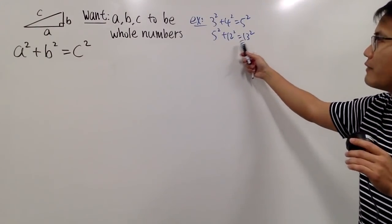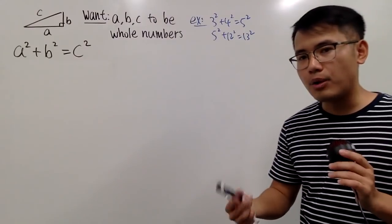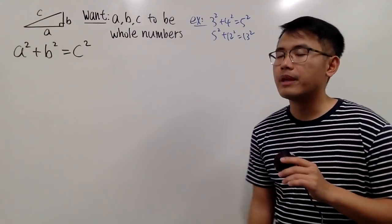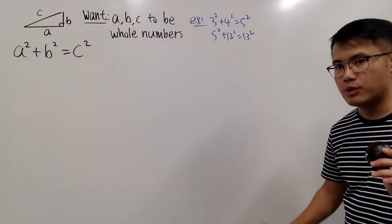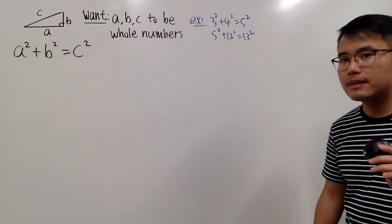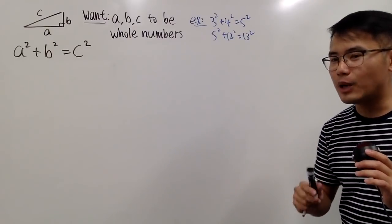Likewise, 5, 12, 13 is also an example of a Pythagorean triple. And the truth is, we have infinitely many of these Pythagorean triples. But the question is, how can we find them though?